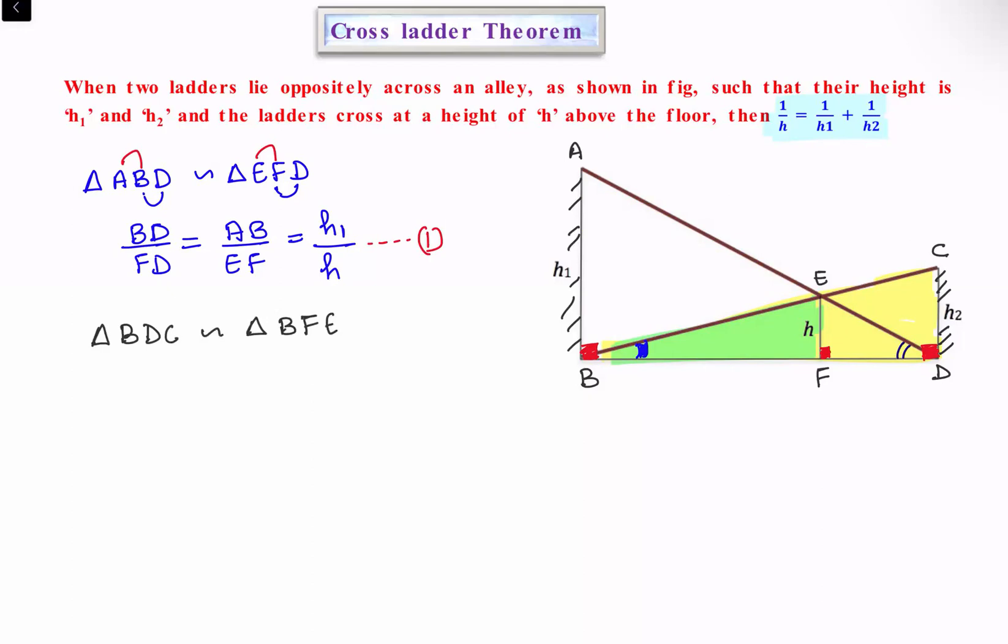Again, we'll take the ratio of sides. BD/BF equals CD/EF. But CD is h2 and EF is h, so this equals h2/h. This is observation number two.